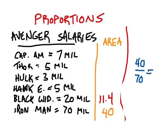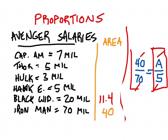Now I'll go ahead and do Hawkeye. Hawkeye received $5 million, and we don't know how much area he'll take up yet. You notice I actually set this up in reverse this time. I did the opposite from before. And that's fine because I've got area on top, area on top, millions of dollars on bottom, millions of dollars on bottom.